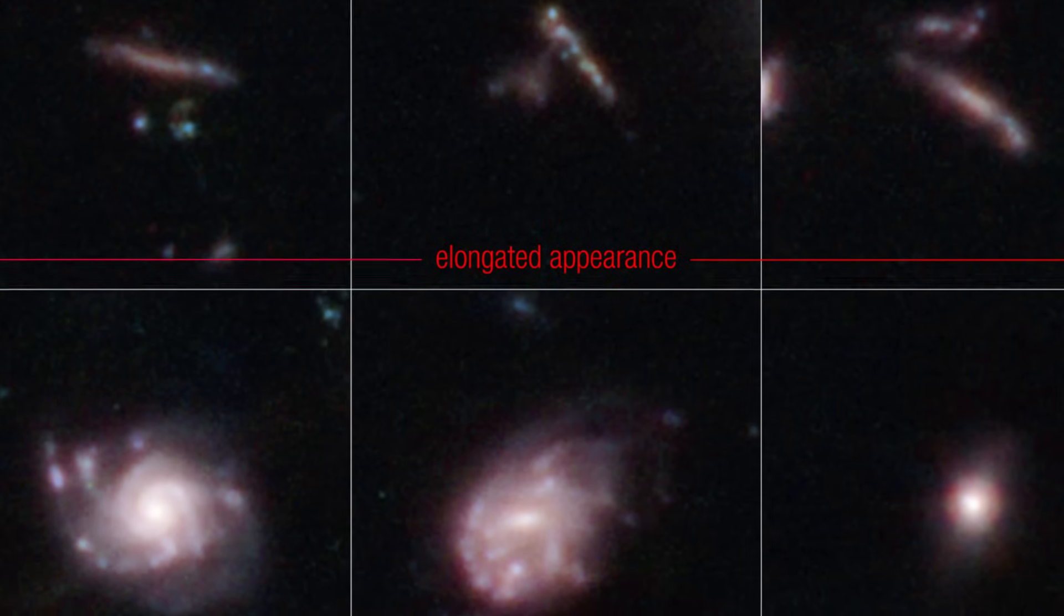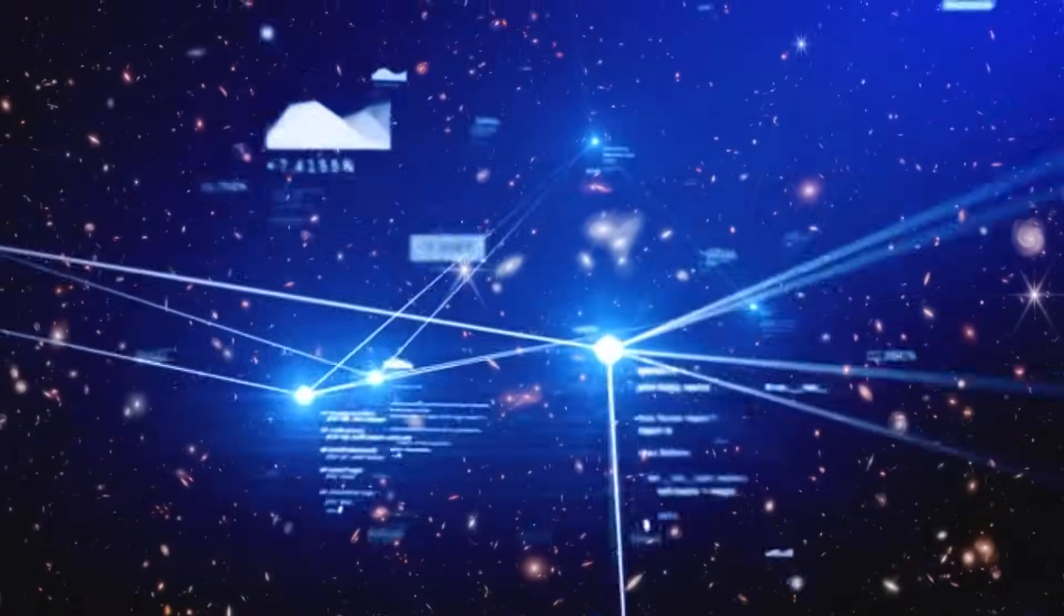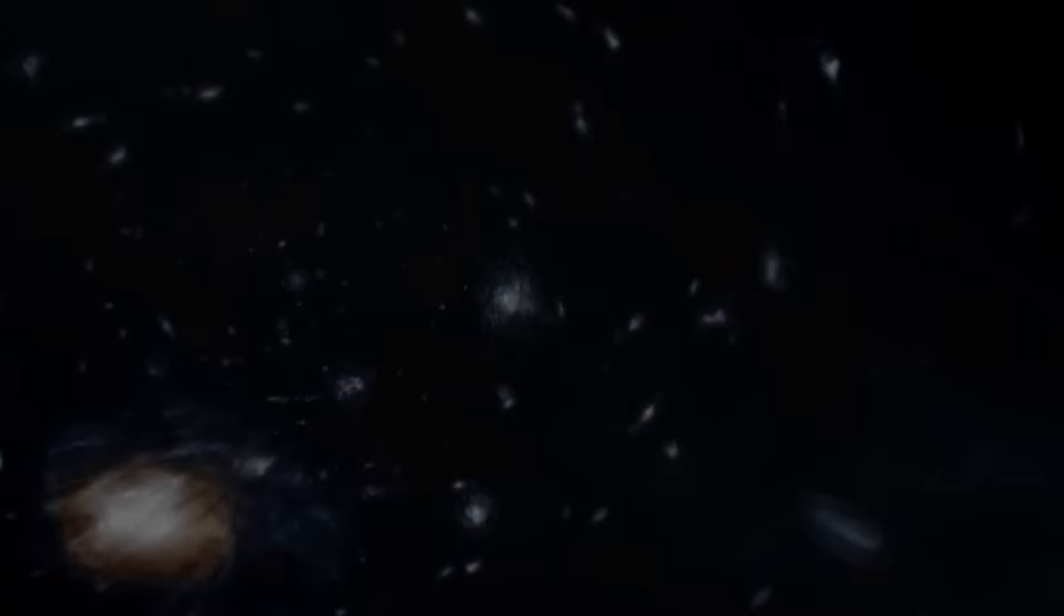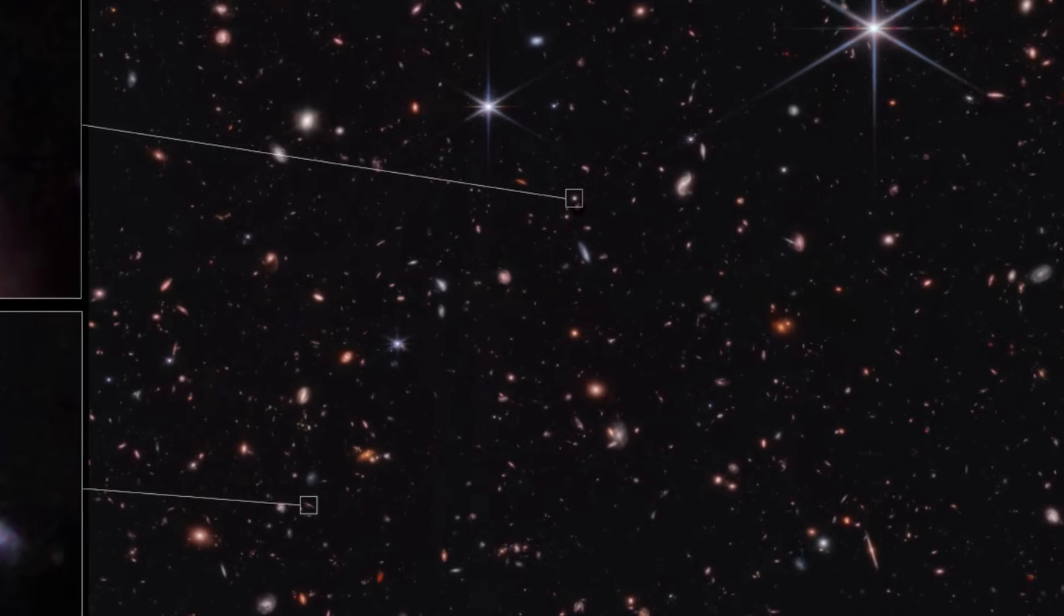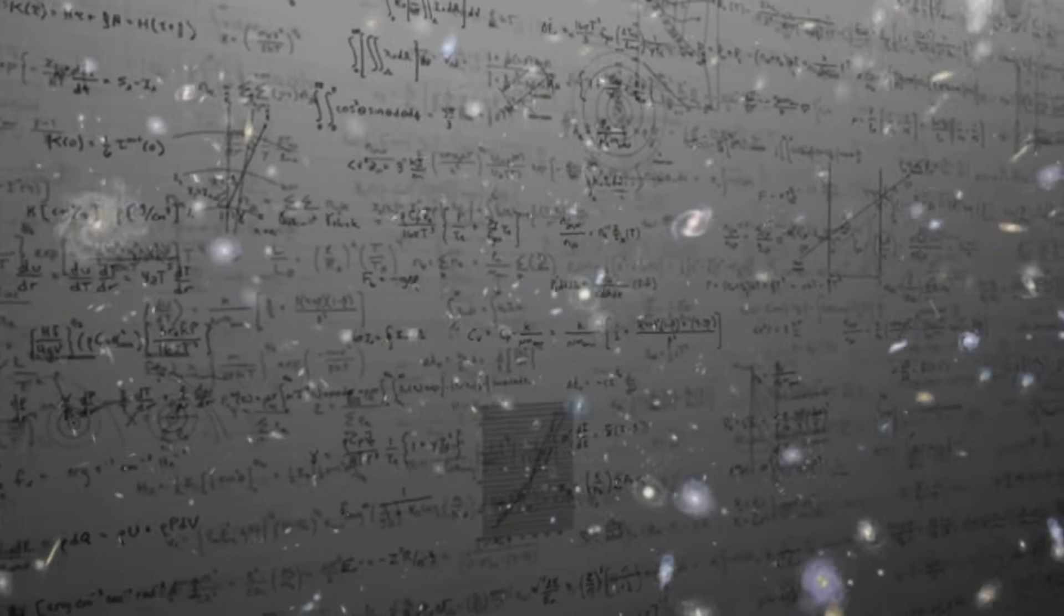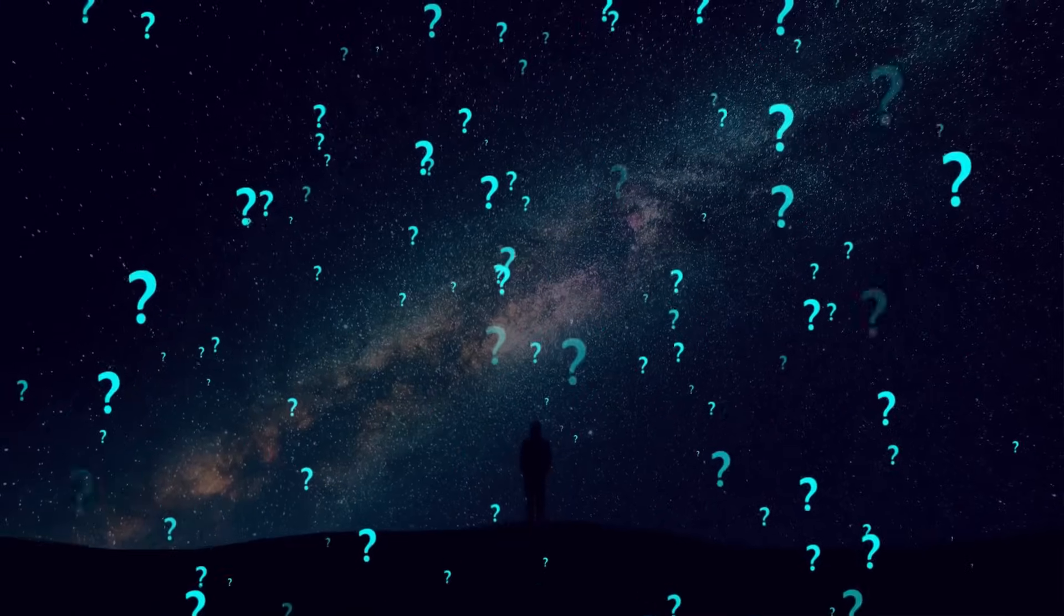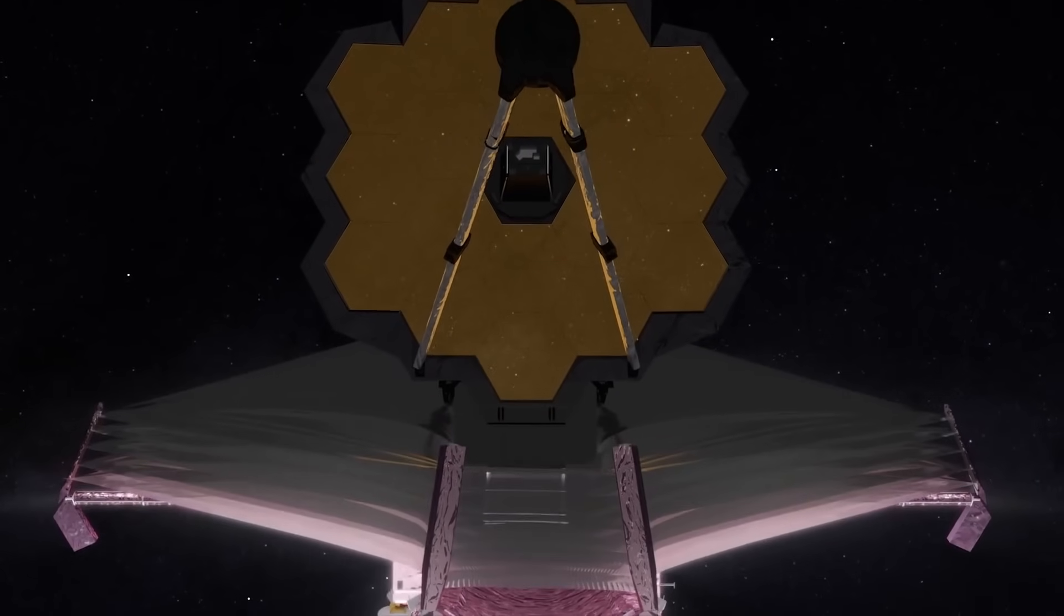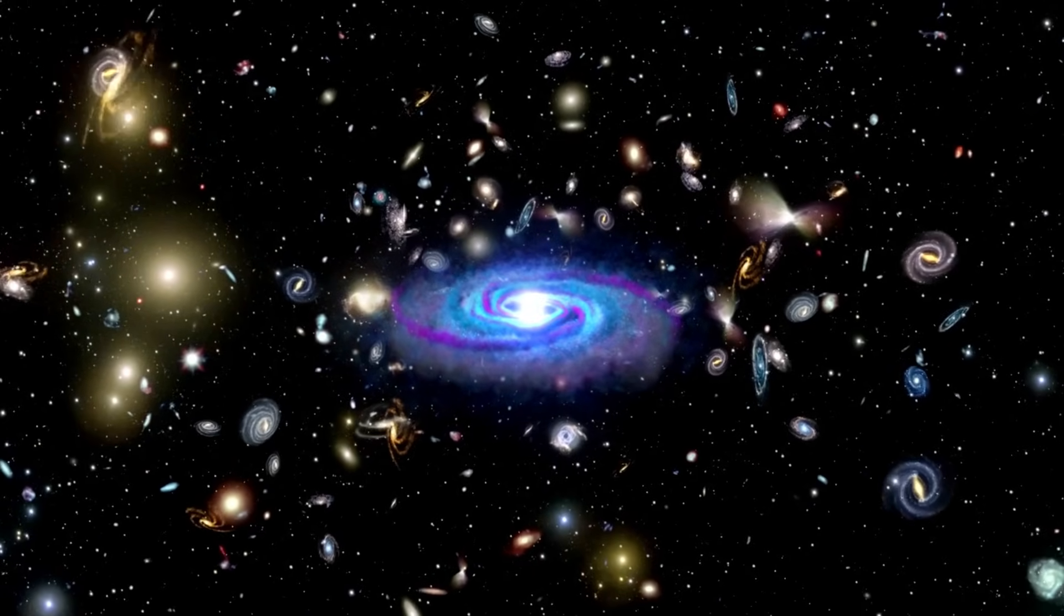However, there are still many open questions and challenges that remain to be solved. For example, how reliable are the measurements of the shapes of distant galaxies, given the limitations of the data and the models? How do the shapes of distant galaxies depend on other factors, such as their environment, their stellar population, and their dark matter halo? How do the shapes of distant galaxies affect their observability and detectability, and how can we correct for any biases or uncertainties? And how do the shapes of distant galaxies compare with the predictions of theoretical models or numerical simulations, and what can we learn from the agreement or disagreement? These are some of the questions that astronomers are working on using Webb and other telescopes and instruments to advance our knowledge of the early universe and the origin of galaxies. And we can expect more exciting and surprising discoveries to come in the near future.